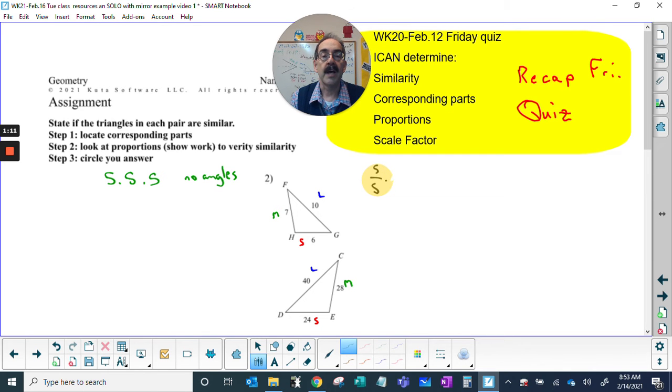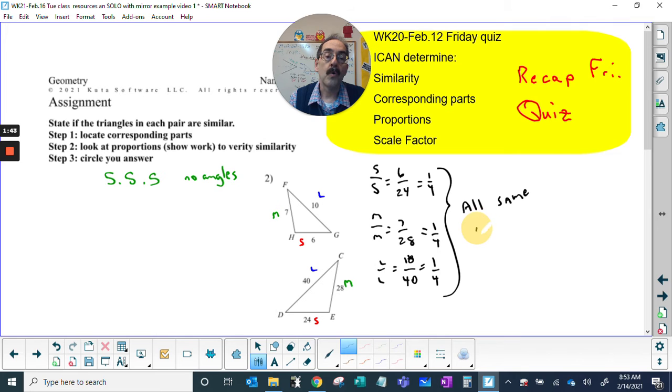Okay, let's do the math. Short side to short side is 6 to 24, medium to medium 7 to 28, long to long 10 to 40. You do the math and we get 0.25, 0.25, 0.25.